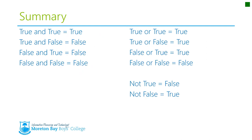As a final summary: for AND — true and true equals true, true and false equals false, false and true equals false, false and false equals false. For OR — true or true equals true, true or false equals true, false or true equals true, false or false equals false. And for NOT — not true equals false, not false equals true. We'll get to work with these in class next lesson. After this slide there are seven quick multiple choice questions — make sure you do them all, and we'll see you at the next lesson.